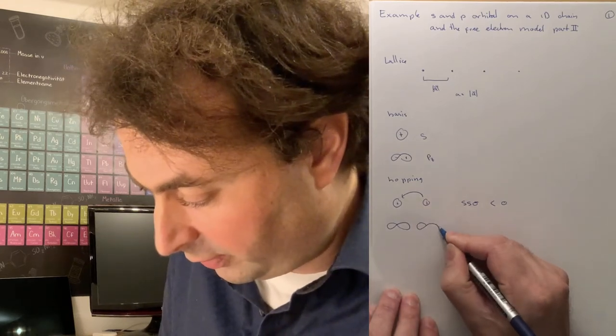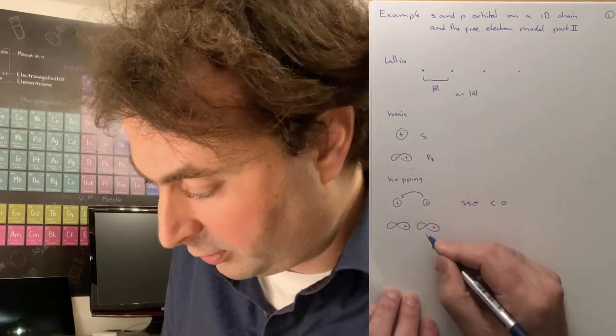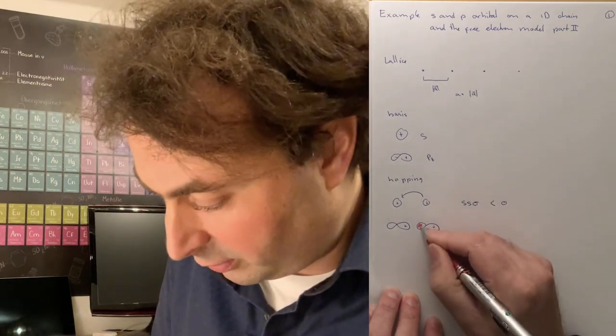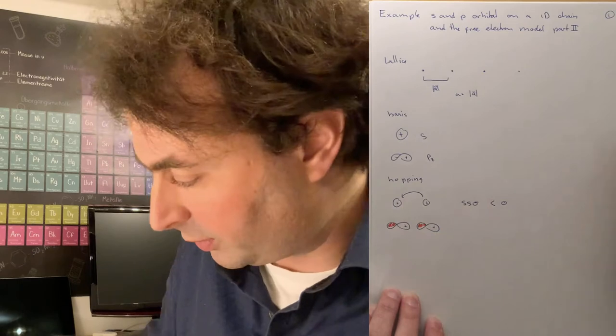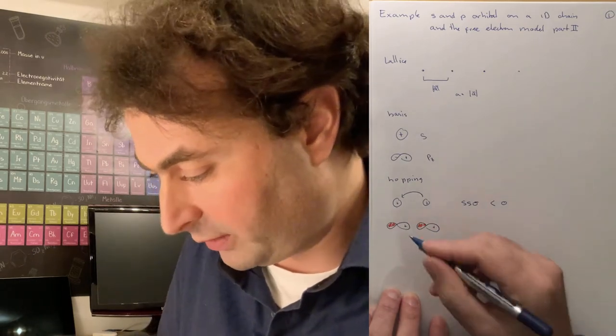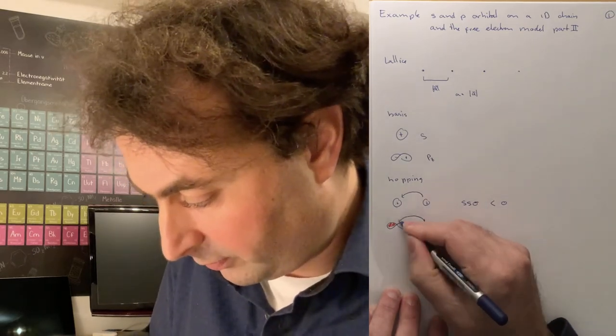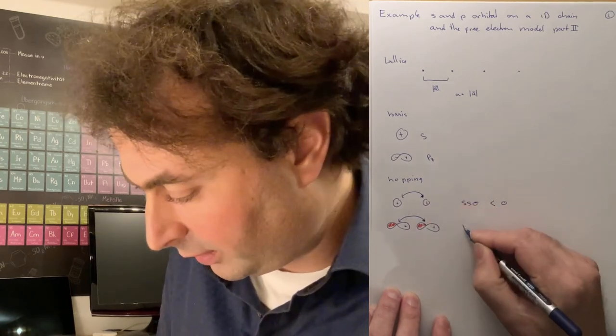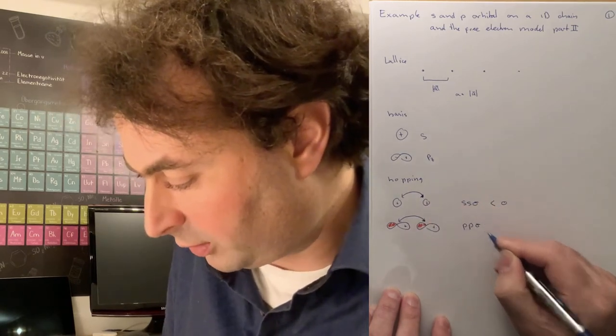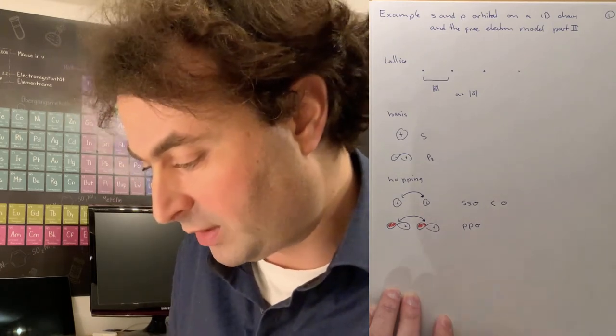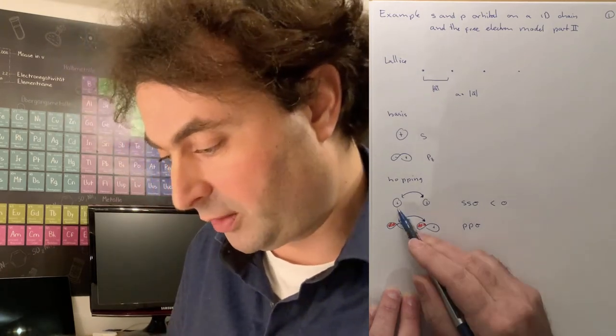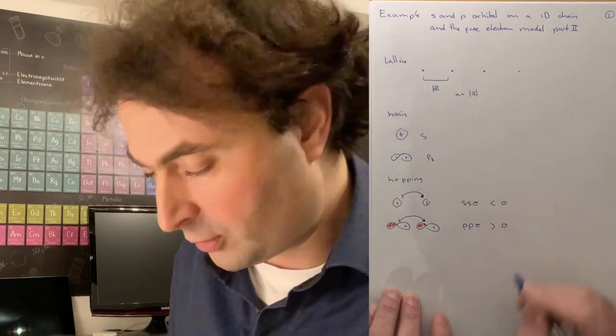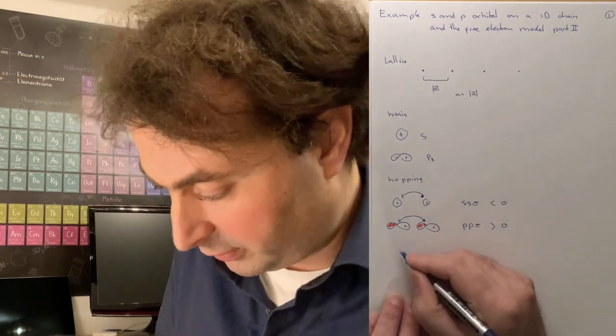Then we can hop from the p orbital to the p orbital. Phases of the wave functions are important because they determine the sign of your hopping matrix elements. We can hop in both directions. This is from a p to a p orbital, making a sigma bond. pp sigma has a plus lobe to a minus lobe, giving a minus sign compared to ss sigma. So pp sigma is larger than zero.